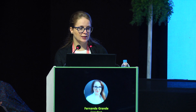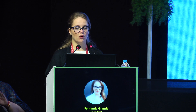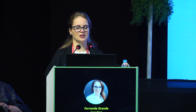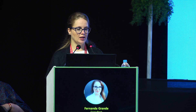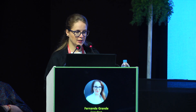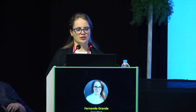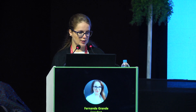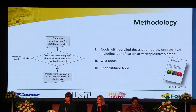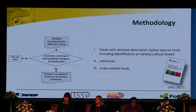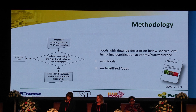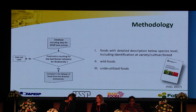To make this dataset, we had to go through each of the 3,300 foods and ask whether the food entry counted toward the nutritional indicators for biodiversity. If it was not counting, we did not include the data. In a summarized way, we included foods with detailed description below species level, including identification at variety, cultivar, or breed. We also included wild and underutilized foods.